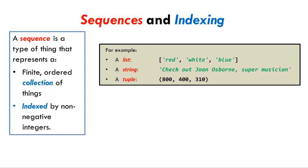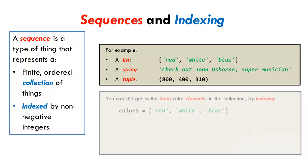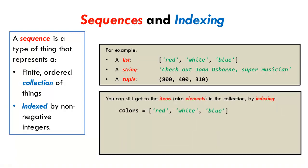Recall that sequences are powerful because they let you refer to the entire collection, as well as the items in the collection, using a single name. For example, the variable colors refers to a collection of three strings that represent colors. You can still get to the items of the collection by indexing. Colors[0] refers to the beginning item of the sequence, here the string red.